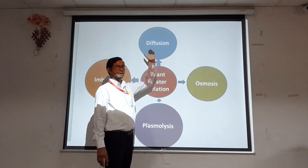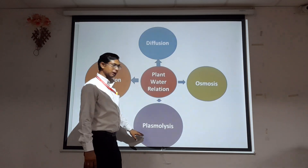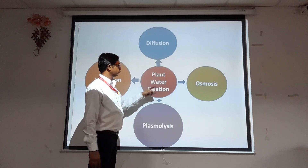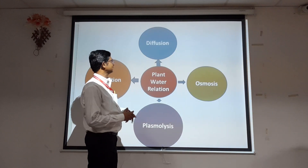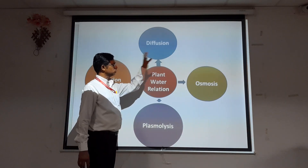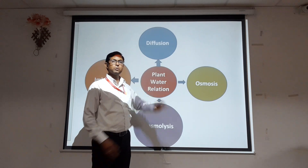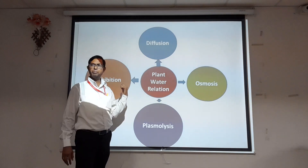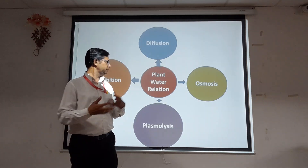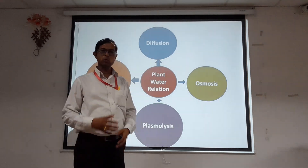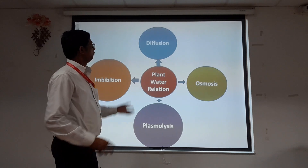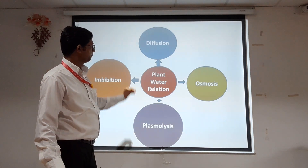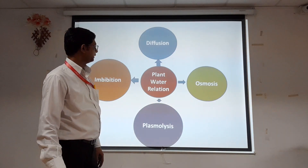Plant water relation involves different processes by which the uptake and expulsion of water in plants is carried out. The first process is diffusion, then osmosis, then plasmolysis, and then imbibition. By following these four processes, the plant water relationship is studied. These processes take place not only in plants but in living organisms generally.